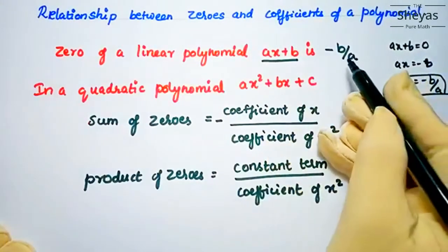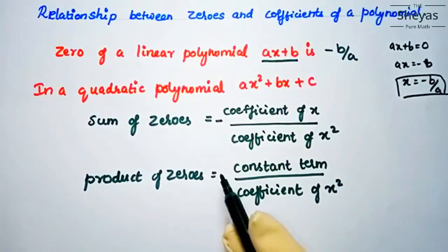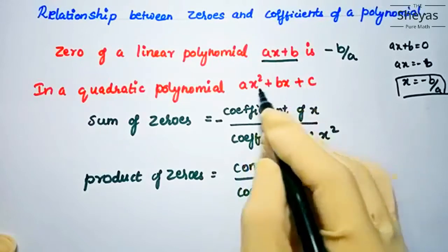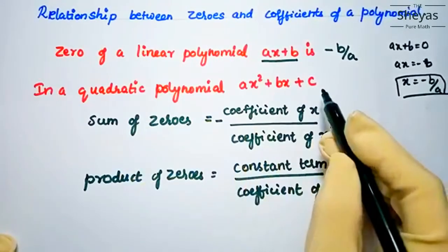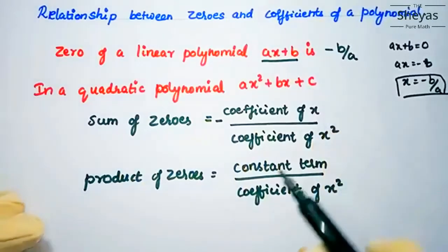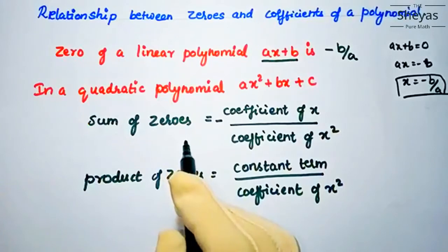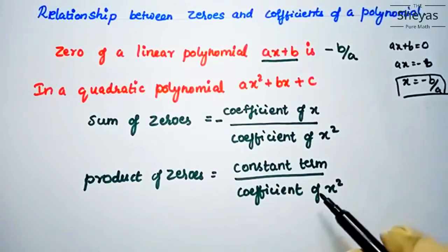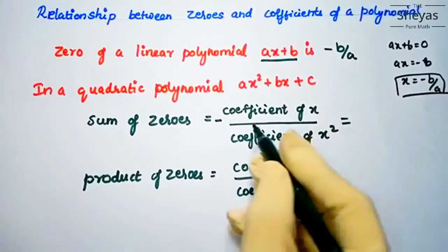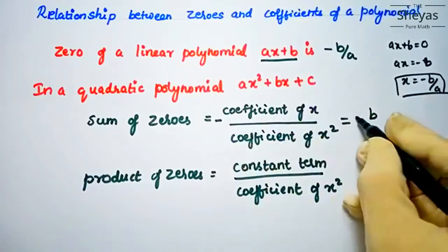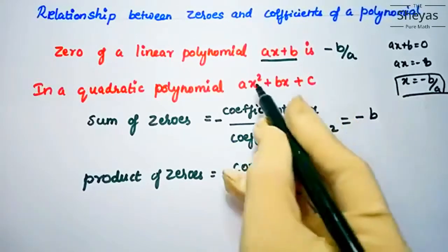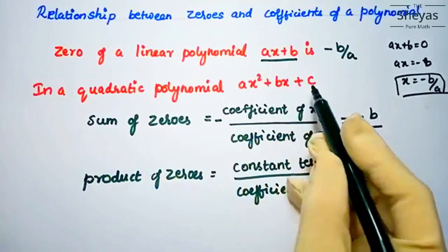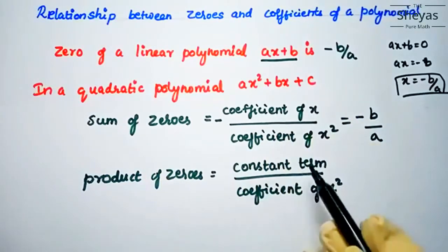The zero of a linear polynomial is minus b by a. For a quadratic polynomial, the highest degree of the variable is 2. The general form is ax squared plus bx plus c. We have two formulas: sum of zeros equals minus coefficient of x divided by coefficient of x squared, which is minus b by a. Product of zeros equals the constant term divided by coefficient of x squared.